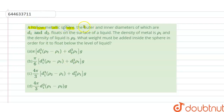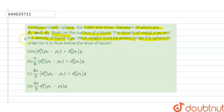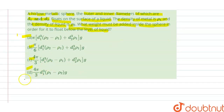A hollow metallic sphere, the outer and inner diameters of which are d1 and d2, floats on the surface of a liquid. The density of the metal is rho1 and the density of the liquid is rho2. What weight must be added inside the sphere in order for it to float below the level of the liquid? Options a, b, c, d are given, and we have to find which option is correct.